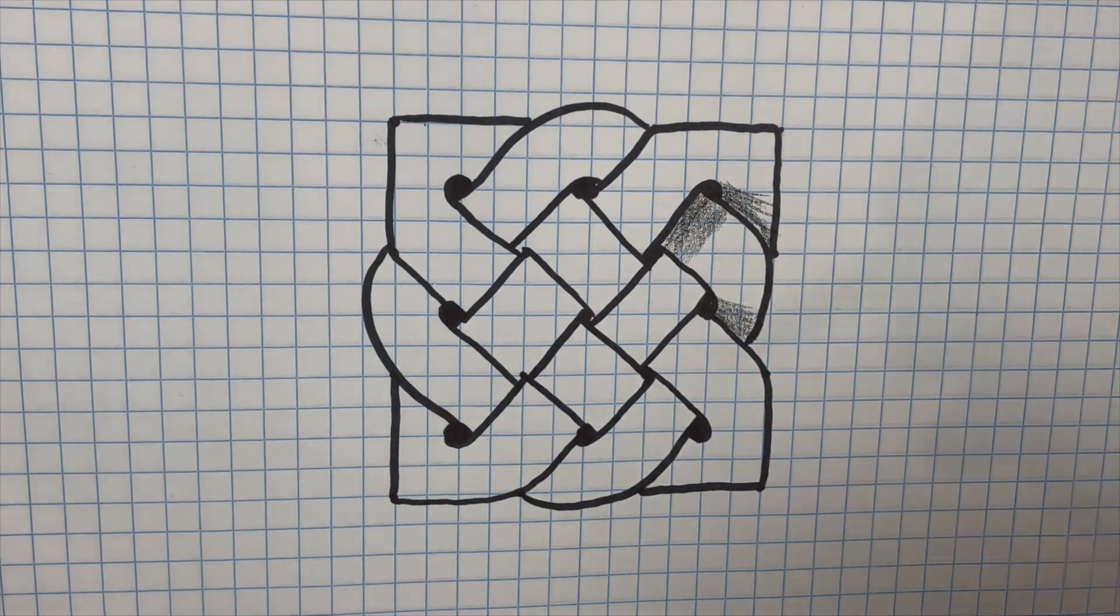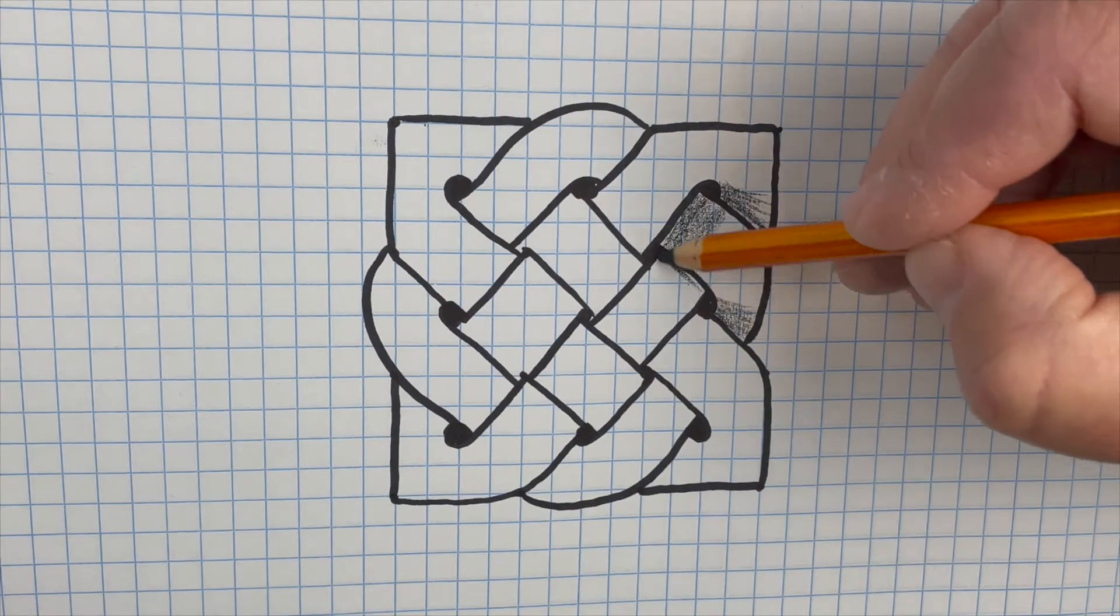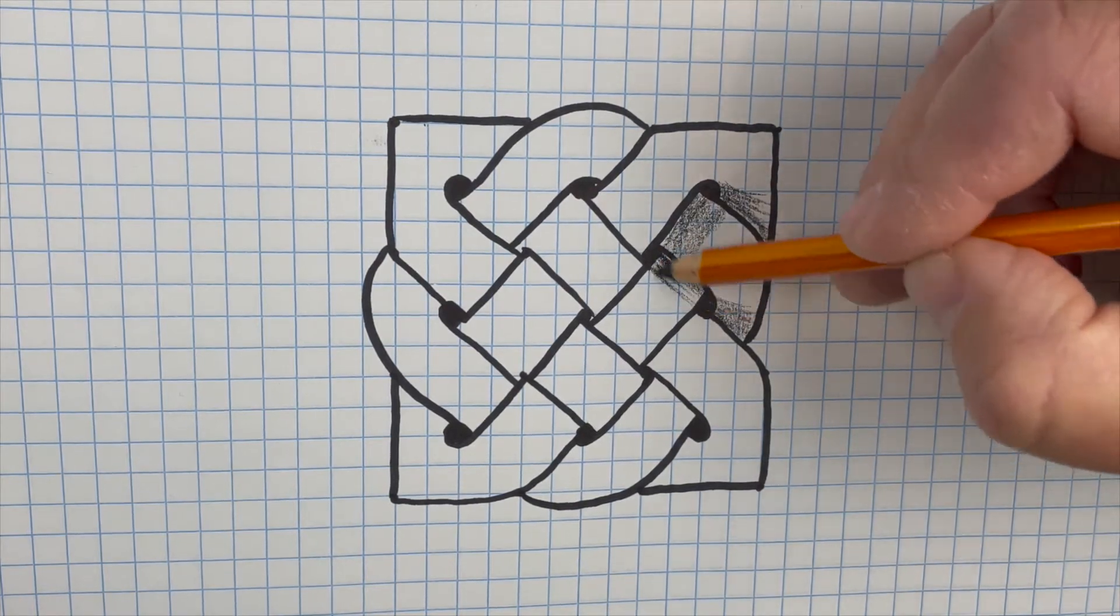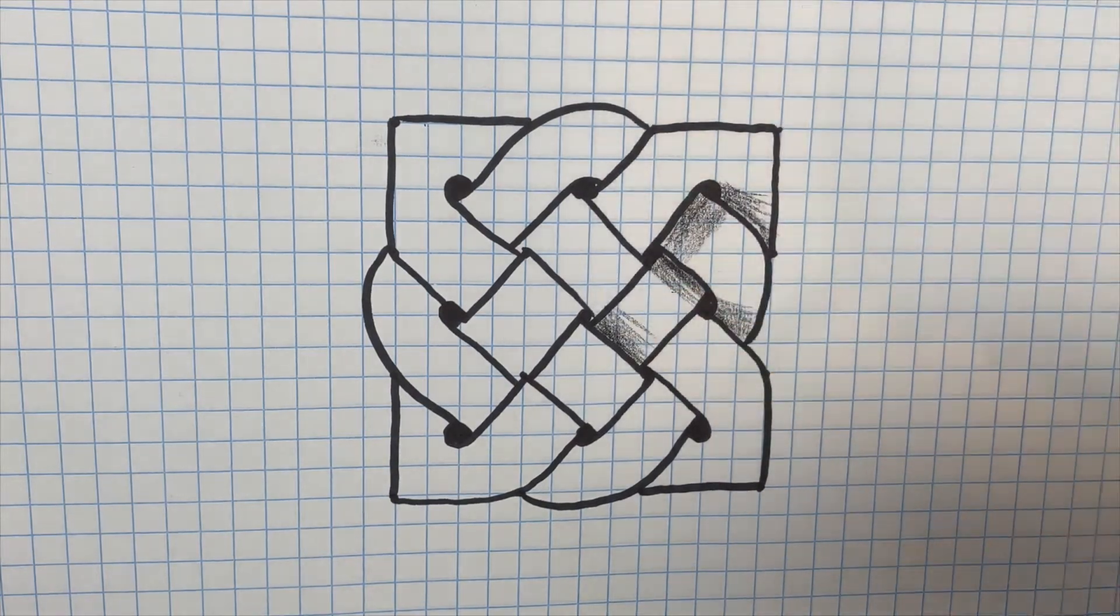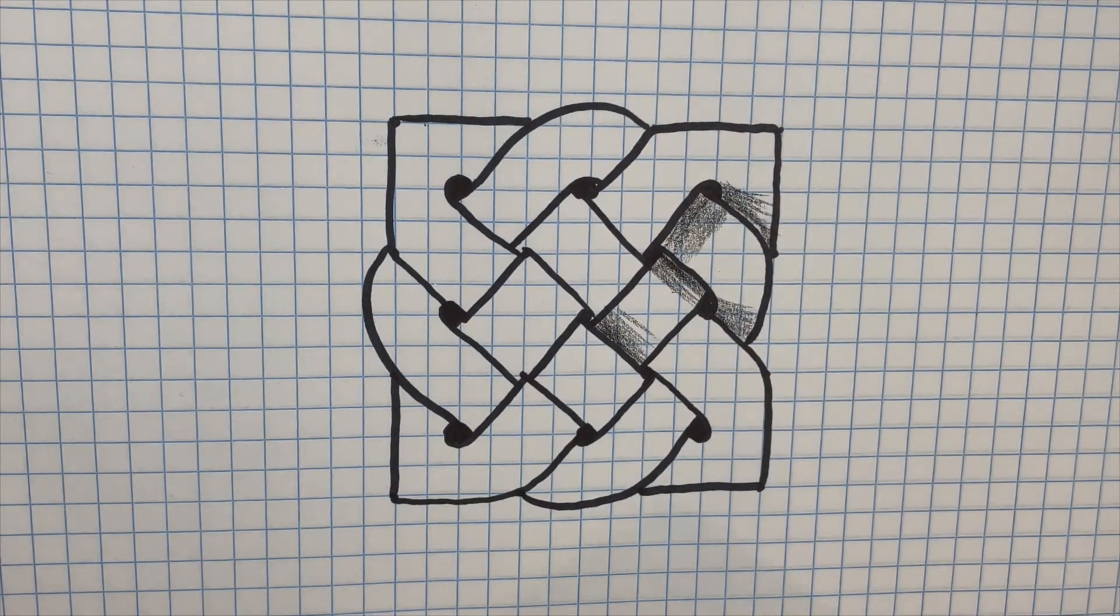And then you're gonna use kind of a graded tone going from darker to lighter. And you'll see in a second as I do my smudging, that's how I'll do it. So when you're done with it, basically it's gonna look like there's a shadow underneath it.